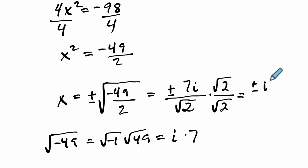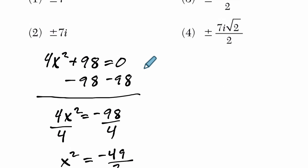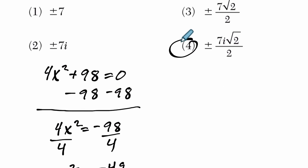So I'll write this i, put the i in front, times 7 square roots of 2. And the square root of 2 times itself is just 2. So let's see if we have that choice. And it looks like we do. They just wrote it in a different way. It's choice 4. All right. I hope that helps.